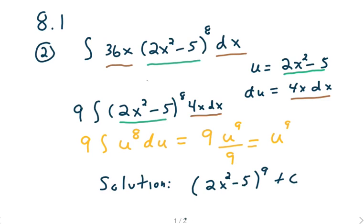And back subbing, we get a solution of the quantity of 2x squared minus 5 being raised to the 9th plus c.